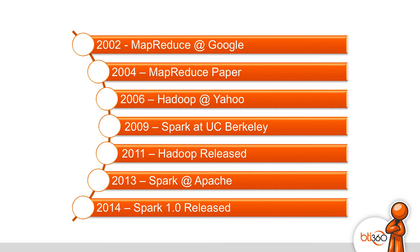In this timeline you can see that in 2009 Matei created Spark while at UC Berkeley. Only four years later, Spark was a project at Apache. And just one year after that, Spark 1.0 was released. Here we are in 2015 with mainstream adoption — Spark is the number one big data project with the most contributors today.